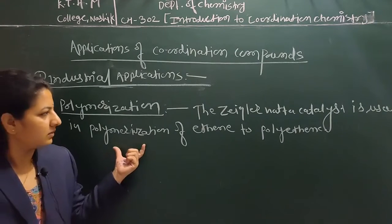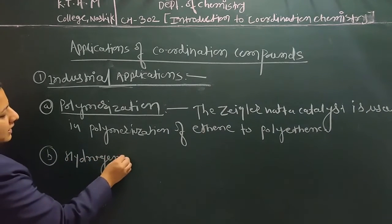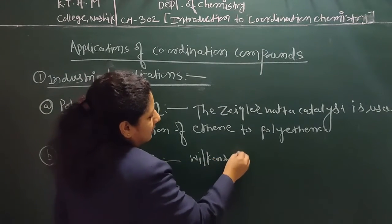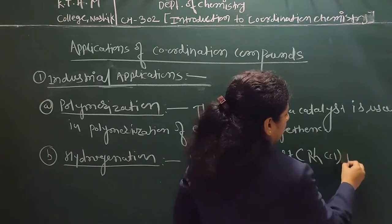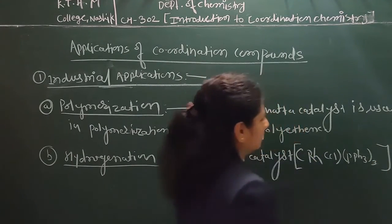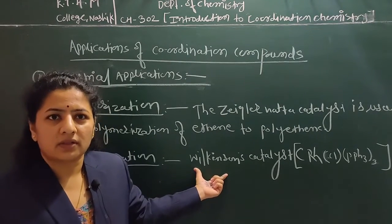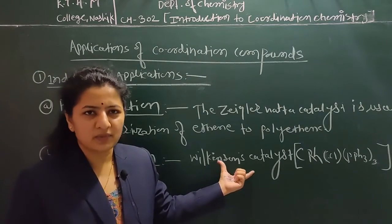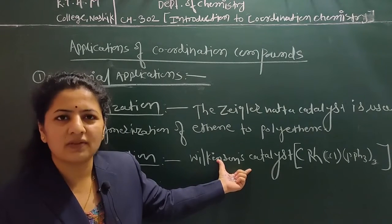The next application is the hydrogenation reaction. In hydrogenation, the Wilkinson's catalyst — that is the rhodium complex RhCl(PPh₃)₃ — is used. This catalyst is very effective and selective at room temperature and ordinary pressure. If we use this catalyst for the hydrogenation of double bonds, it can selectively hydrogenate terminal groups at the end of a chain rather than the double bond in the chain.